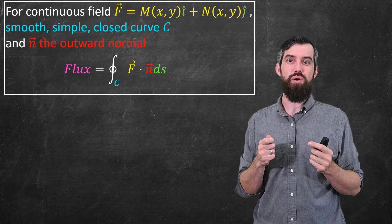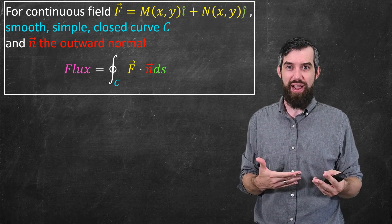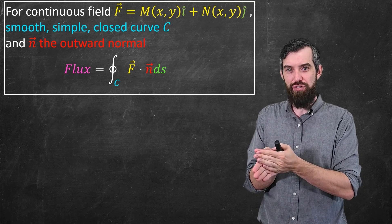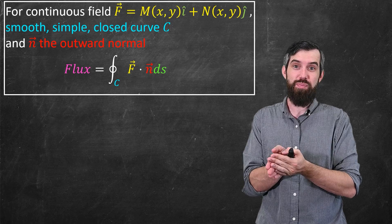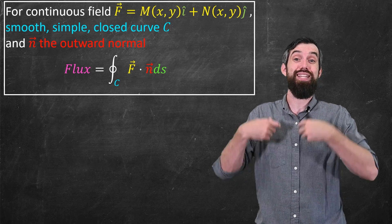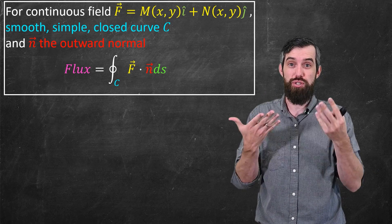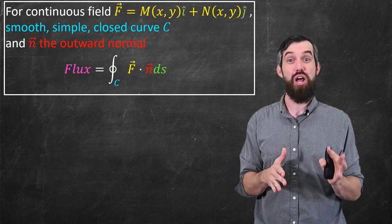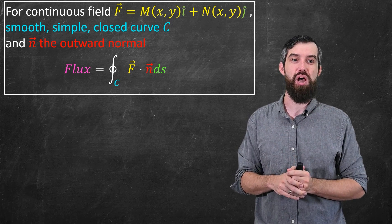Next up, if I focus on the n vector, we saw that the n was the normal vector. However, at any point along the curve, there's actually two different normals in the plane, and we're going to choose the one that's pointing outward to our closed curve.